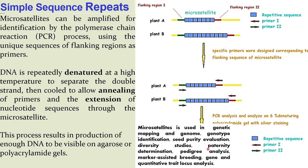The difference in banding pattern between the two DNA samples is observed through gel electrophoresis. The uses of simple sequence repeat include: genetic mapping or genotyping, genotype identification, seed purity evaluation, diversity study, paternity determination, pedigree analysis, marker-assisted breeding, and gene and quantitative trait locus analysis.